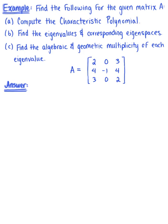Find the following for the given matrix A. We want to compute the characteristic polynomial, find the eigenvalues and their corresponding eigenspaces, and last but not least, find the algebraic and geometric multiplicity of each eigenvalue. Here we have a 3 by 3 matrix A.